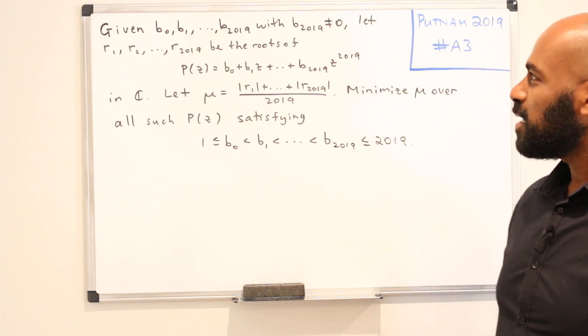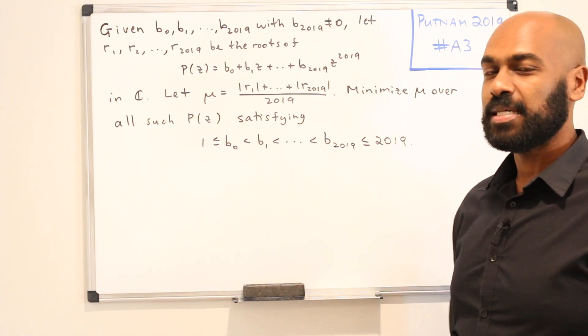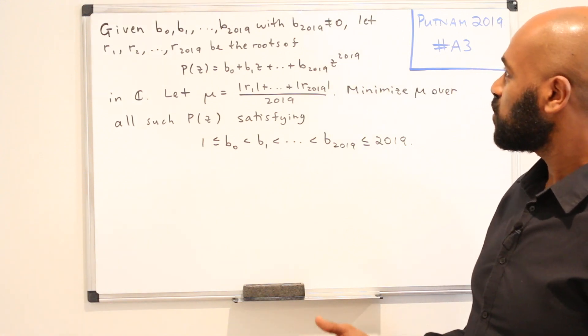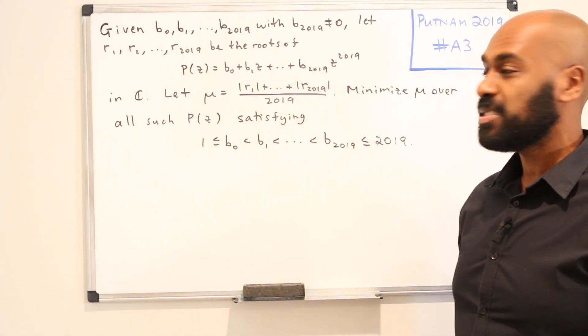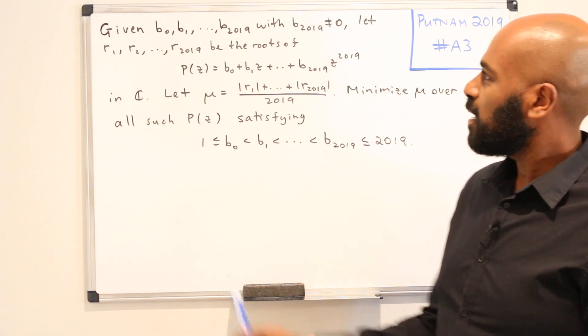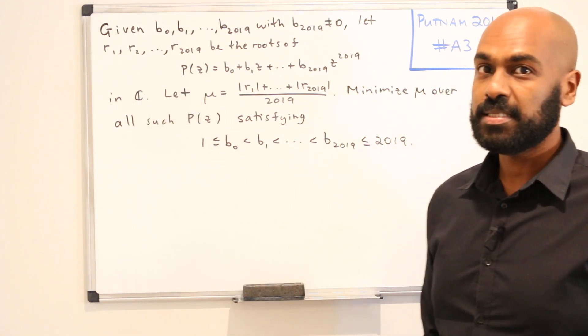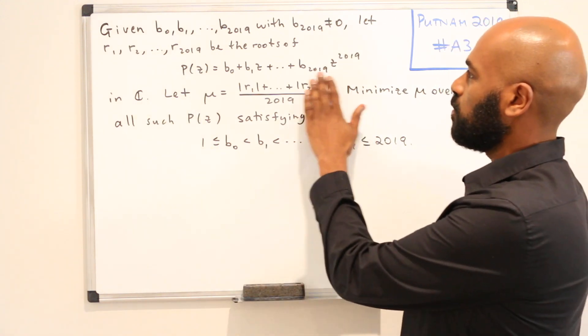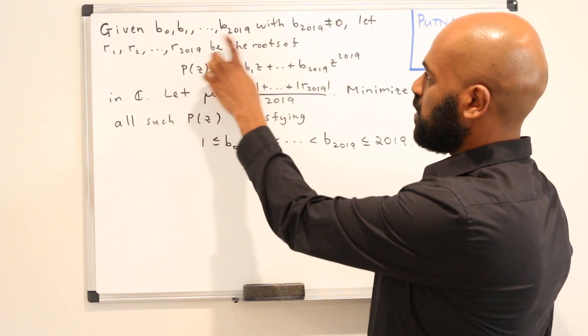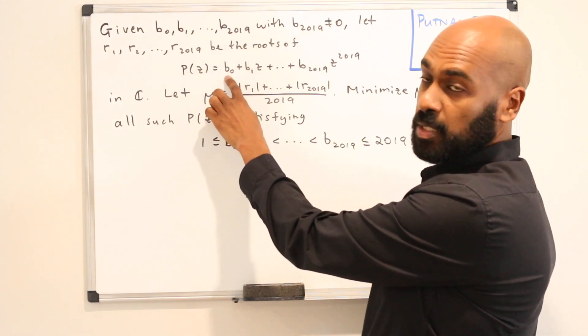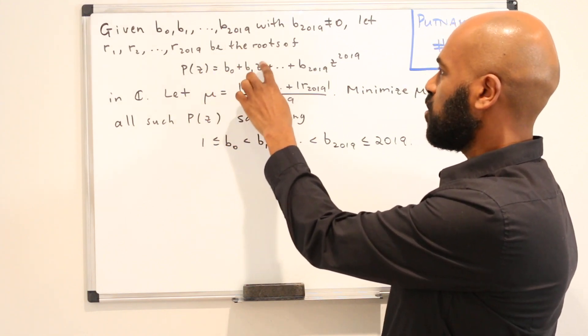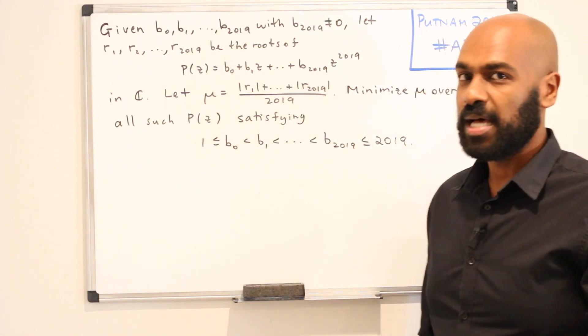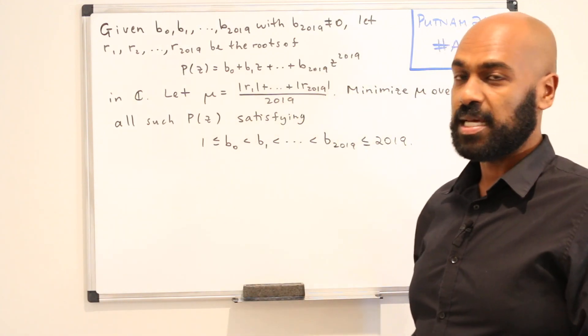The problem states let B0 through B2019 be real numbers with B2019 not zero and let R1 through R2019 be the roots of this polynomial that has these bi's as coefficients with B0 being the constant one, B1 being the linear one, etc up to B2019 being the z to 2019 one.